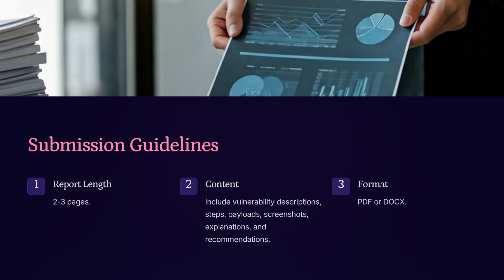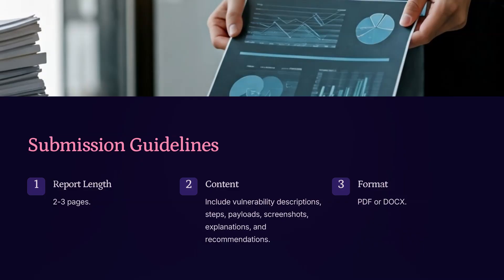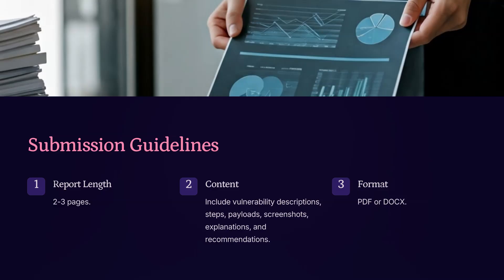When preparing your final report, please follow these three important guidelines. First, report length: your submission should be around two to three pages — concise but thorough. Second, content: be sure to include detailed descriptions of the vulnerability, the steps taken to exploit it, any payloads used, screenshots, explanations, and your security recommendations. Third, format: submit your report as either a PDF or a .docx file, and make sure everything is readable and well-organized. These standards help maintain consistency and clarity across all submissions.